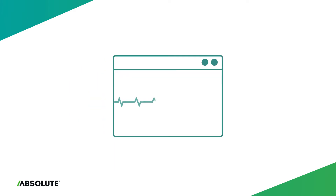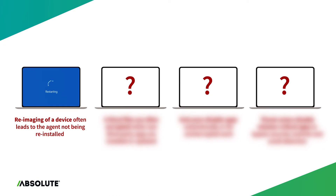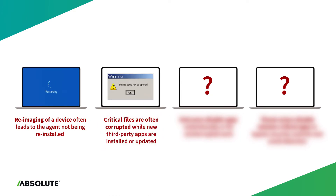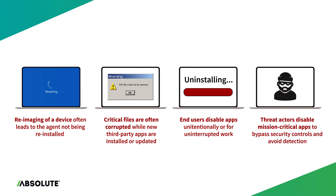After all, applications fail regularly due to a variety of reasons such as devices being re-imaged and software being removed as a result, critical files being corrupted when other applications are installed, negligent users damaging applications unknowingly, and malicious insiders or hackers disabling applications to bypass security controls.